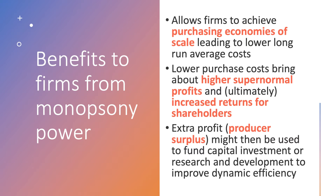What are the main potential benefits of monopsony power for a firm? A business with big buying power — like a supermarket buying supplies from farmers, or businesses like Amazon who have huge buying power from other manufacturers — the first obvious benefit is it allows firms to achieve lower costs. It's a good example of what we call a purchasing economy of scale. If you're buying in bulk and negotiating huge buying contracts with a supplier, you essentially have the power in the negotiation.